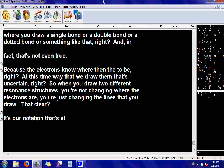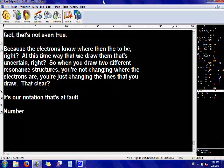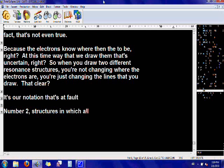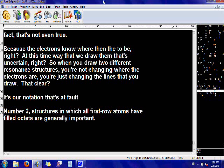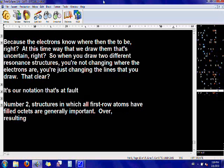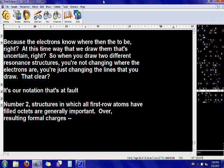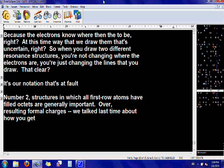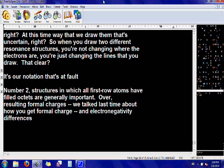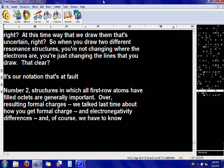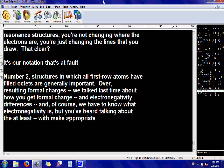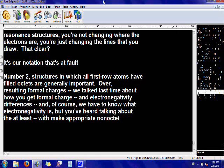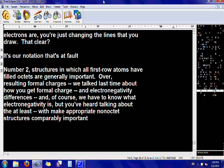Number two, structures in which all first row atoms have filled octets are generally important. However, resulting formal charges, we talked last time about how you get formal charges, and electronegativity differences, and of course we have to know what electronegativity is, but you've heard about it at least, can make appropriate non-octet structures comparably important. If you have a bad charge distribution, even though you have octets, it still might not be a very good charge distribution.